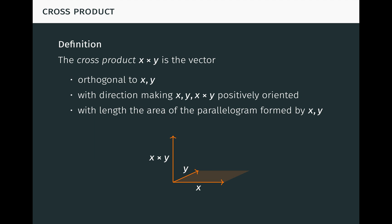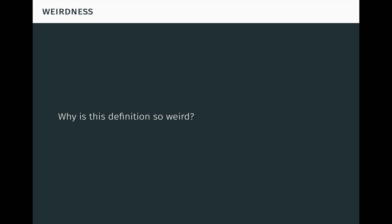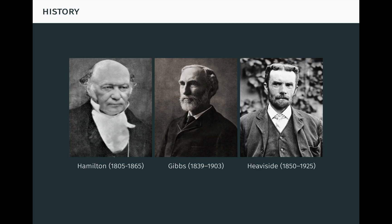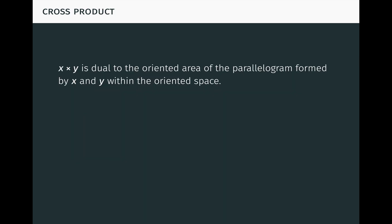So great, we've arrived at the definition of the cross product. But after seeing it, you might wonder, why is this definition so weird? I mean, who would have ever thought to define a vector this way? And why would they have ever thought it would be useful? Which it is, by the way, extremely useful. The weirdness stems from the fact that the vector x cross y is dual to the oriented area of the parallelogram formed by x and y within the oriented space.